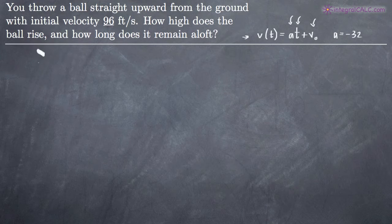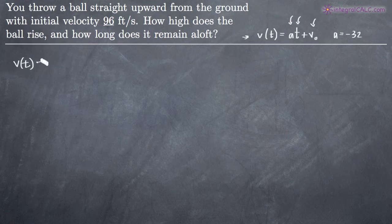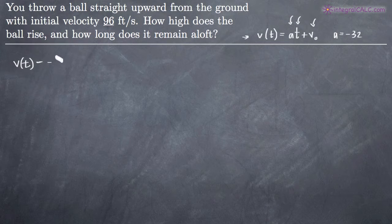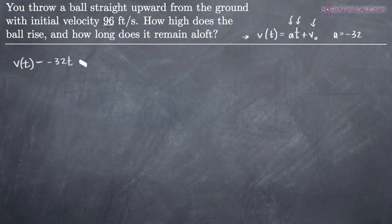The first thing we'll do is write an equation using this formula for the velocity function v(t). We get v(t) = a·t + v₀. We're going to plug in negative 32 for a, leave t as the variable, and plug in 96 for the initial velocity, since we were given that in the original problem.